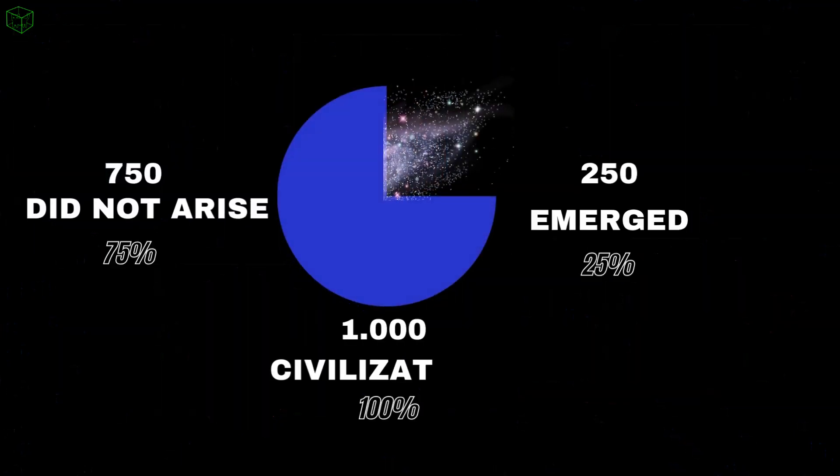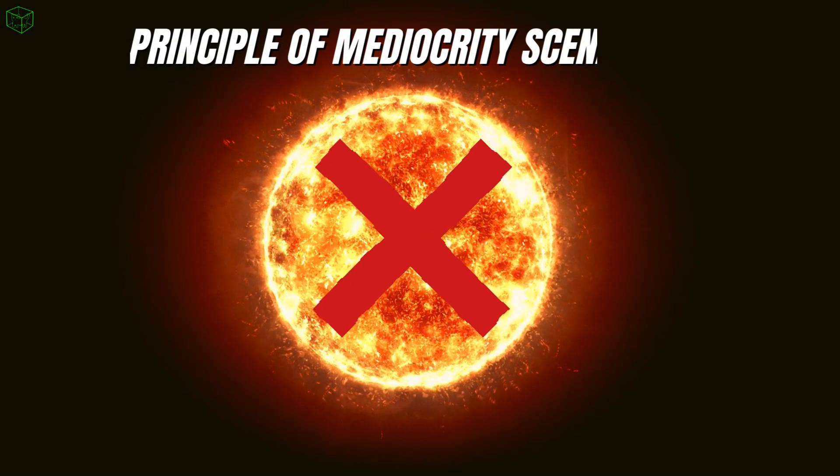In this sense, we're not in an extremely early stage. If there are a thousand intelligent civilizations in total in our galaxy, considering past and future, there are currently 250 intelligent civilizations, including ours. Therefore, 75 percent of the civilizations that will arise in the Milky Way are yet to come. This is the principle of mediocrity scenario.